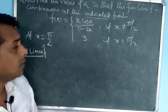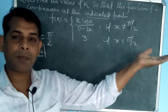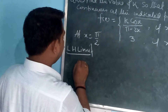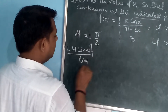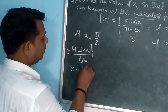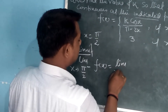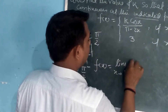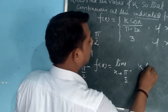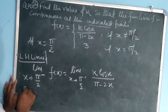Since x is not equal to π/2, we have to take x less than π/2 and x greater than π/2. So LHL limit — the problem is how to find the limit as x tends to π/2 from the left. For LHL we use f(x) = k·cos(x) / (π - 2x).